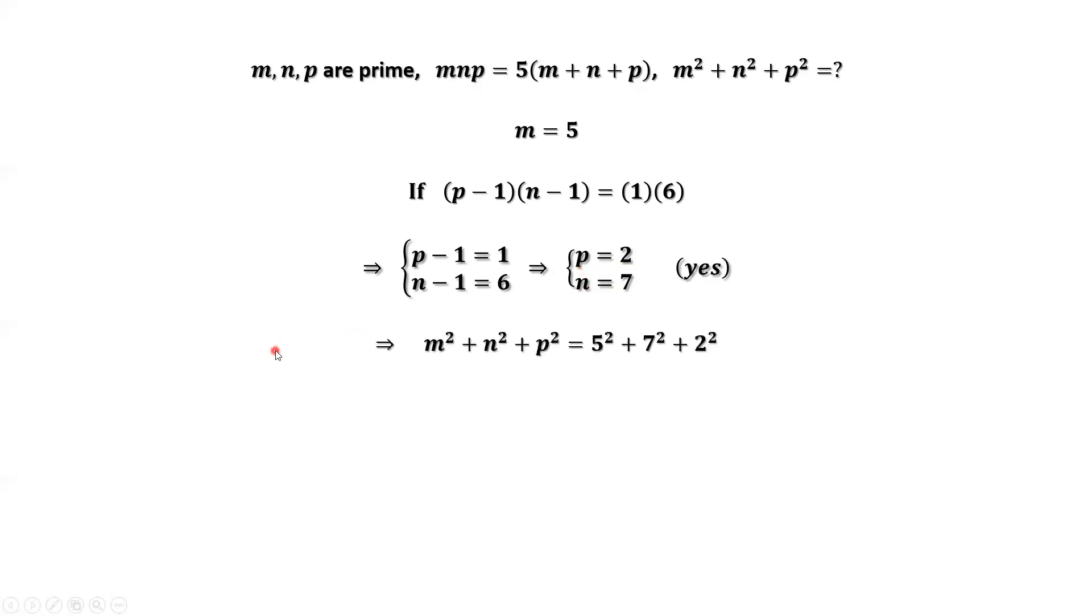What is the final answer? m squared plus n squared plus p squared equals 5 squared plus 7 squared plus 2 squared, which is 78. That's all. Thanks for watching and see you next time.